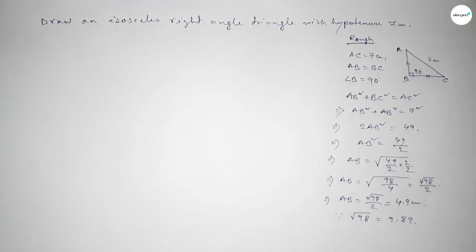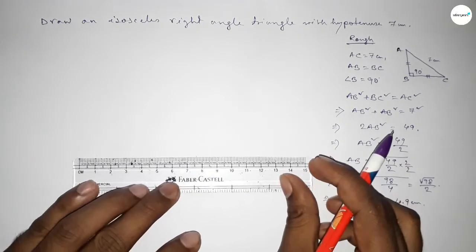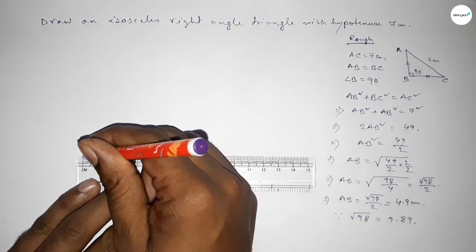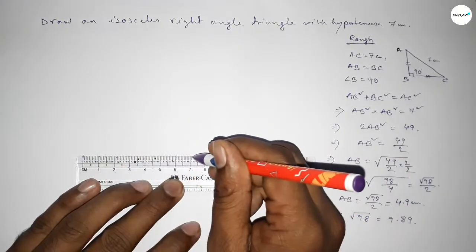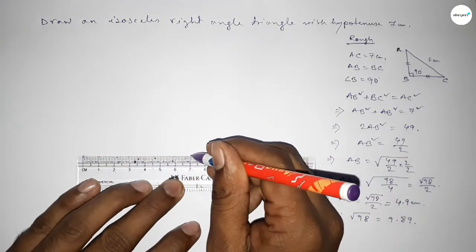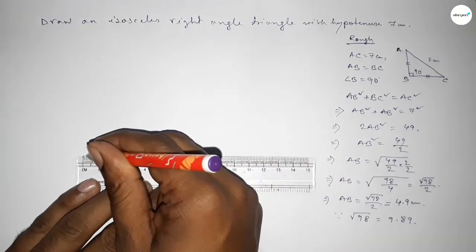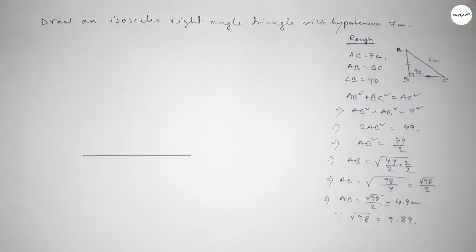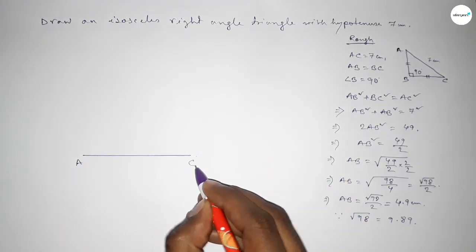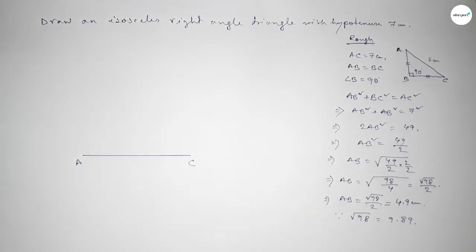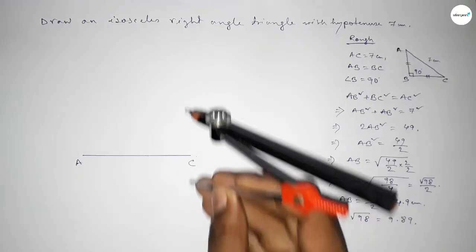Now we have to draw the triangle. First, drawing a line of length 7 centimeters. Taking point A on one end and point C on the other. Now we have to bisect this line.